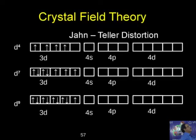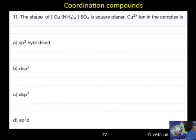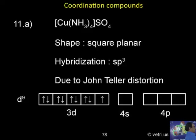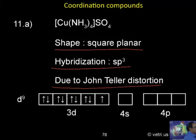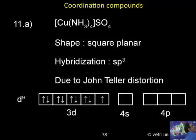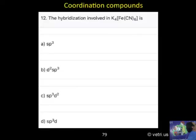For question number 11: the shape is square planar, hybridization is sp3. Due to Jahn-Teller distortion, since Cu2+ has d9 configuration, both strong and weak field ligands give distortion. Hence the shape changes from tetrahedral to square planar.